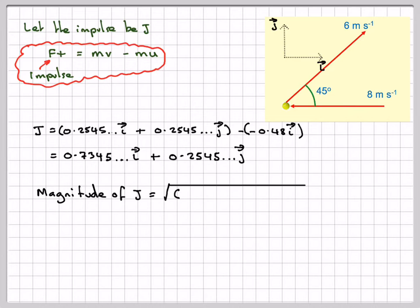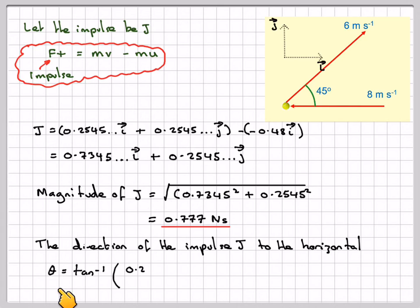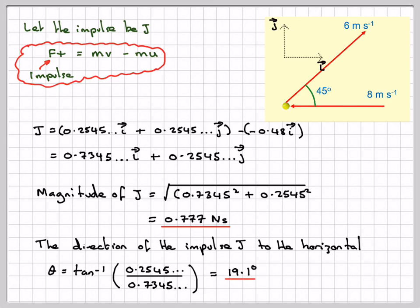The magnitude of the impulse is the magnitude of that vector: square root of 0.7345 squared plus 0.2545 squared, which gives 0.777 newton seconds. The direction relative to the horizontal is theta equals tan inverse of the j component divided by the i component: 0.2545 divided by 0.7345, which gives 19.1 degrees.